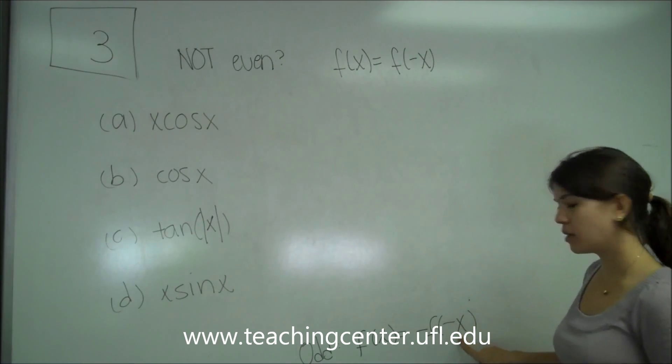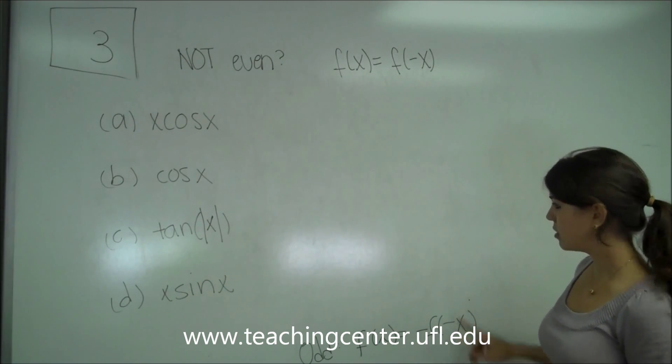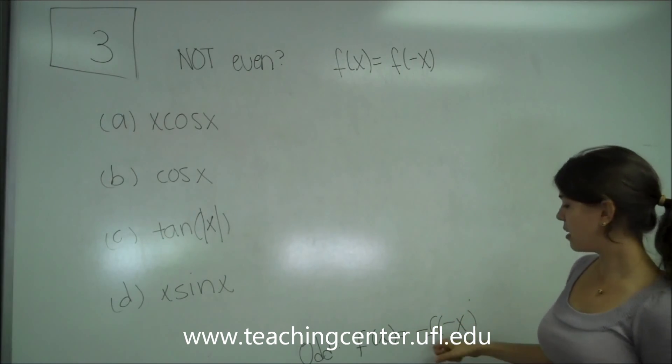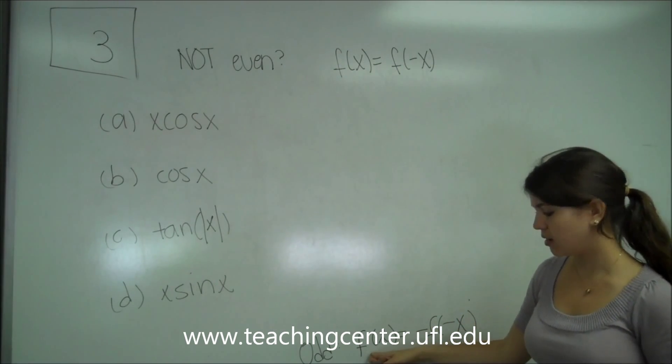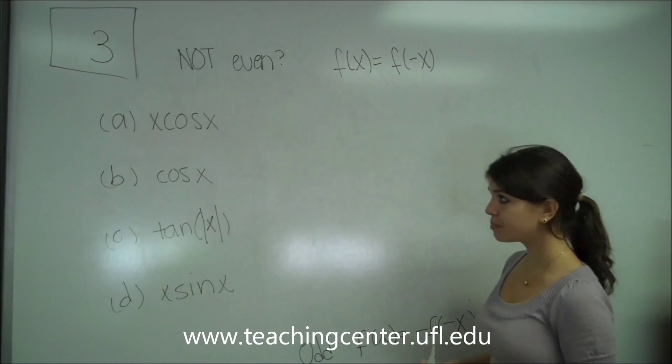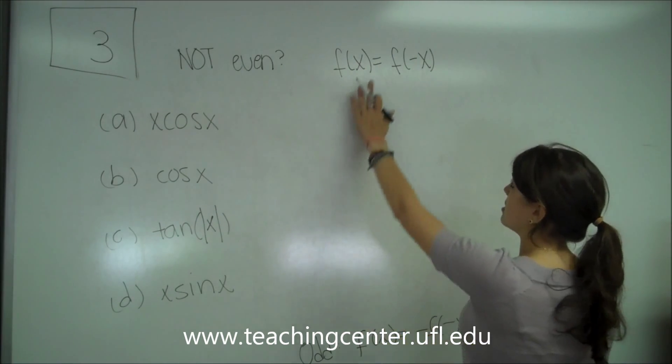And then a little side note here, odd is when f of x equals the negative f of negative x. So you basically plug in negative x into it, and whatever result you get, just flip the sign, and that should be the same as the solution for the regular just positive x.